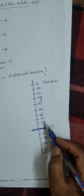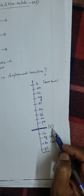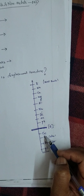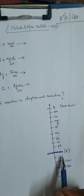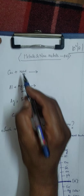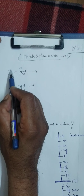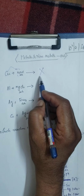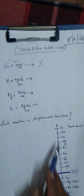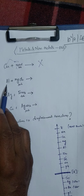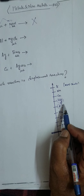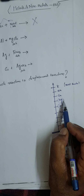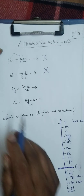Lead can displace copper, but it cannot liberate hydrogen. Now, copper is below sodium in the activity series, so copper cannot displace sodium. Therefore, copper reacting with sodium chloride solution — that reaction is not a displacement reaction. For aluminum and magnesium: magnesium is above aluminum, so magnesium is more powerful. Therefore, aluminum cannot displace magnesium.